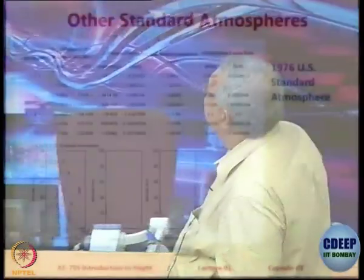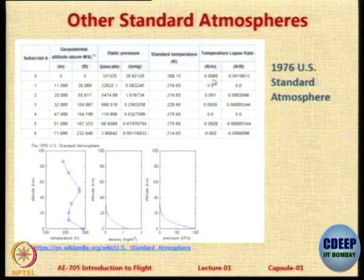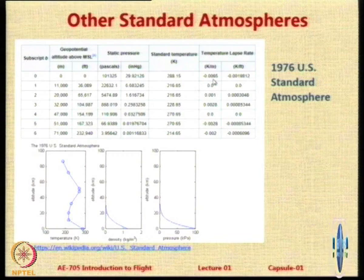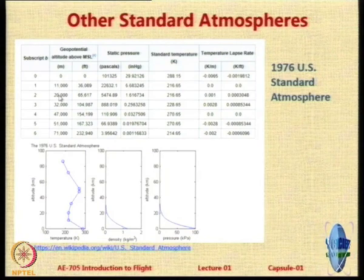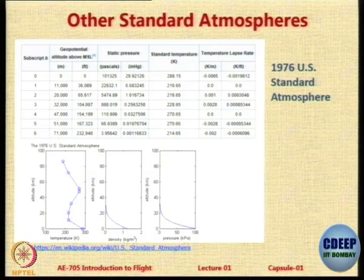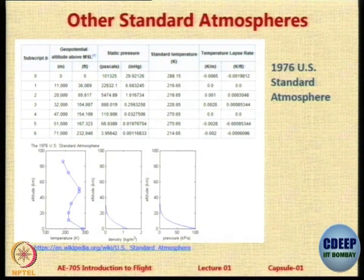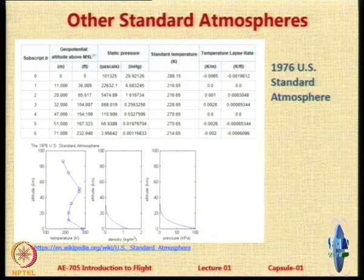ISA is not the only atmosphere. Let us look at some other atmospheres. The US standard atmosphere has 288.16 K or 15°C at sea level and a lapse rate of 6.5, which is what we know, and then there is zero lapse rate between 11,000 to 36,000 feet or 11 to 20,000 meters. In ISA, this constant region extends to 25 km, but in the US standard it is up to 20 km. The sea level temperature may be the same, but there are subtle variations.